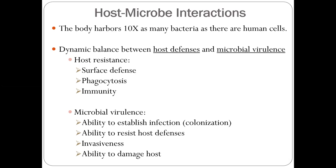Host resistance includes surface defense, phagocytosis — related to the phagosome and macrophage — and immunity including B-cell and T-cell, which is humoral immune and cell-mediated immune. Microbial variants include colonization, the ability to resist host cells, invasiveness, and the ability to damage host cells. Always remember: a body that does not have disease and stays healthy maintains a balance between host defense and microbial variants through physical, chemical, and immunological defense systems.